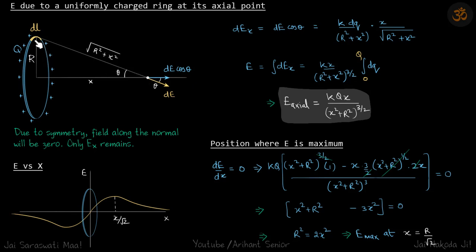We'll take a small element dl, and due to this element we'll find a small electric field dE. We'll take the dE cos θ component because by symmetry, one element will cancel out the vertical component of another element, but horizontal components will add up. Due to symmetry, field along the normal will be zero; only Ex remains, so only in the x direction we will have field.